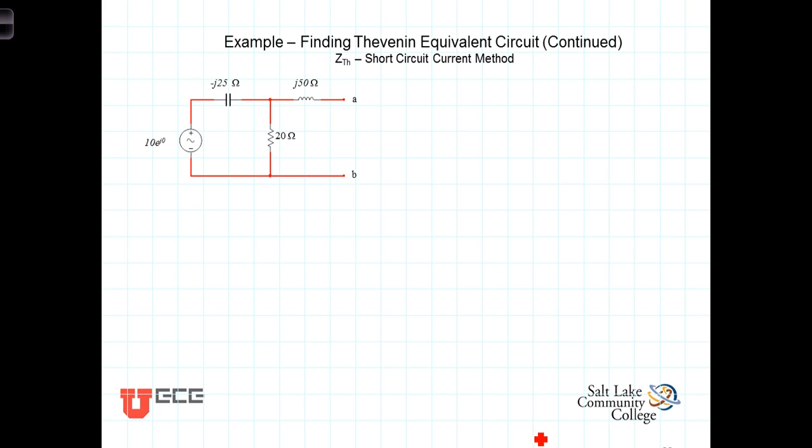The second method for determining the Thevenin equivalent impedance involves calculating the short circuit current that would flow, or the current that would flow if you were to apply a short circuit between the terminals. Z Thevenin is equal to the open circuit voltage divided by the short circuit current. We've already determined the open circuit voltage.